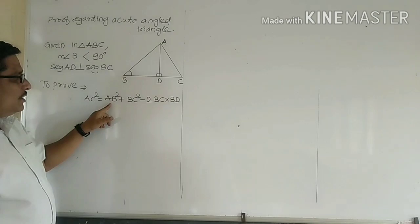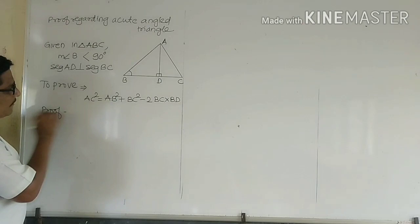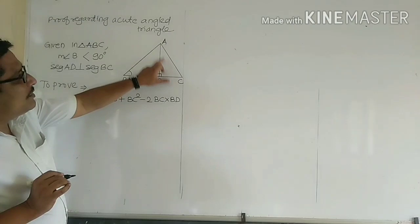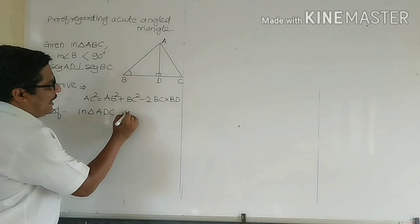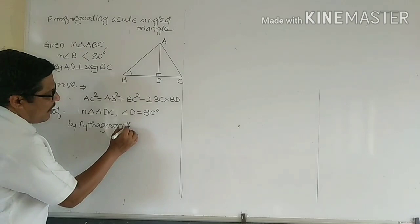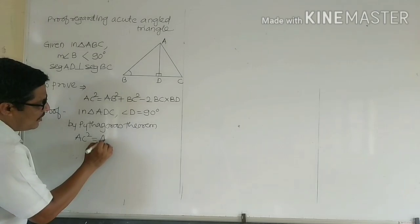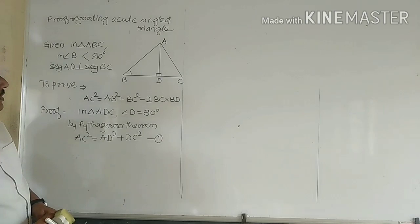In this case, we have to prove AC² = AB² + BC² − 2BC × BD. For that, in triangle ADC, angle D is equal to 90 degrees. Therefore, by Pythagoras theorem, AC² = AD² + DC². Let this be step number 1.